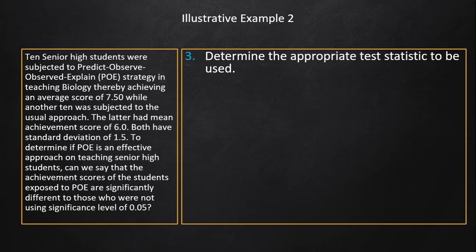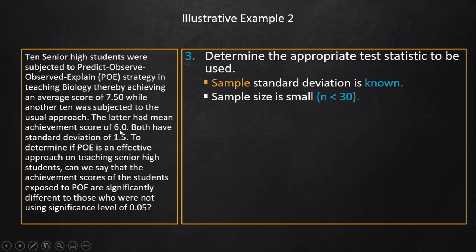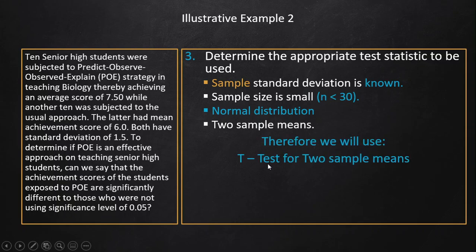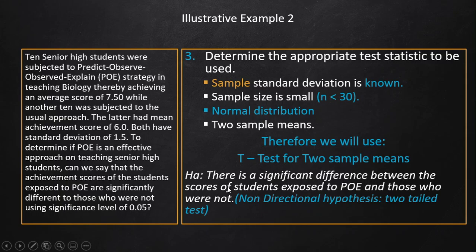Step 3: We use the t-test because the sample standard deviation is known (1.5), sample sizes are small (10 and 10, both less than 30), the probability distribution is normal, and we have two sample means (7.5 and 6.0). Therefore, we use the t-test for two sample means. Since the alternative hypothesis is non-directional, we use a two-tailed test.